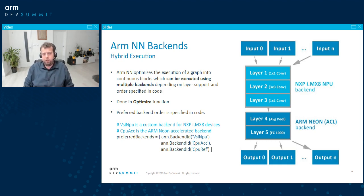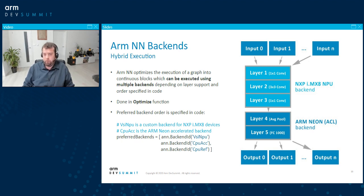There is a nice example of how backends work called hybrid execution. As mentioned, you can specify multiple backends. In this example, I'll give the NXP i.MX8 backend and also the ARM NEON backend. In our use case, the NXP backend only supports convolution.